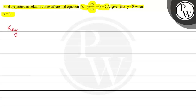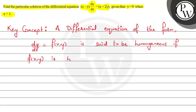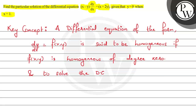Before starting the solution, let's note down the key concept for this problem. A differential equation of the form dy/dx equal to a function f(x,y) is said to be homogeneous if the function f(x,y) is homogeneous of degree 0.